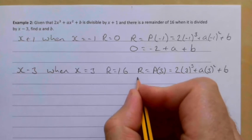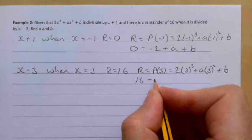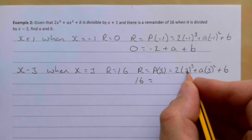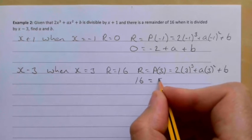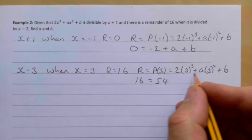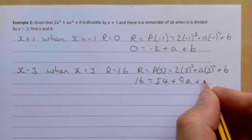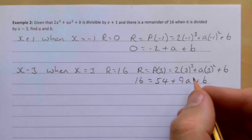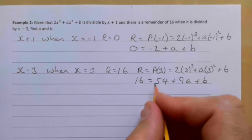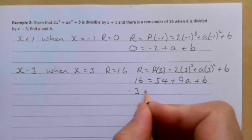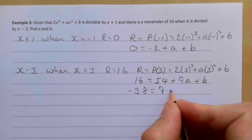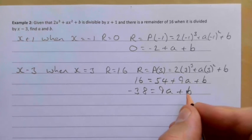That gives us 16 = 54 + 9a + b, since 3³ = 27, times 2 is 54, and 3² = 9. Tidying this up and taking 54 from both sides: -38 = 9a + b.